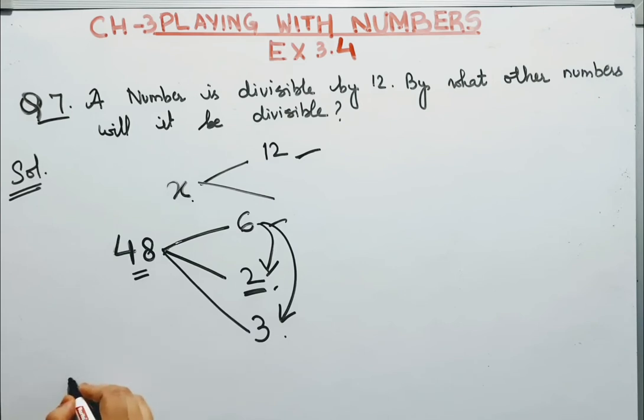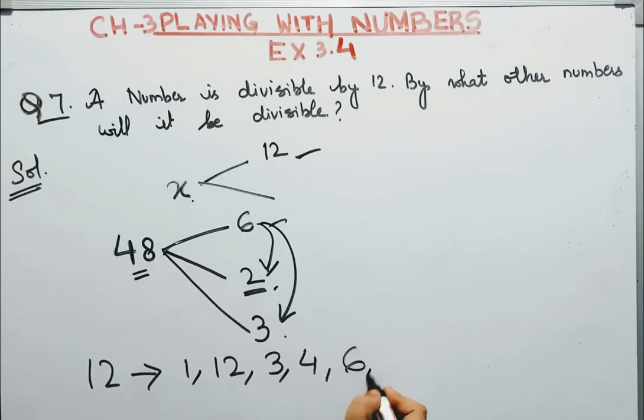So what are the factors of 12? We have 1 and 12. Then we have 3, 4s are 12, 6, 2s are 12.